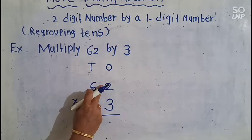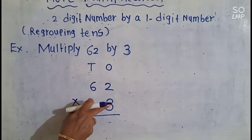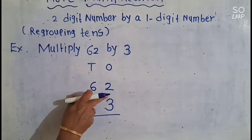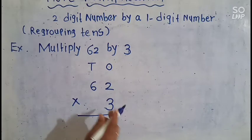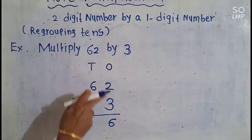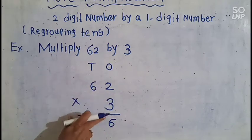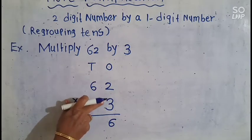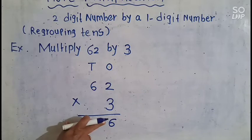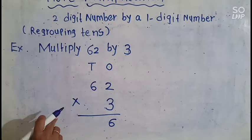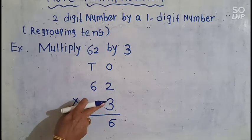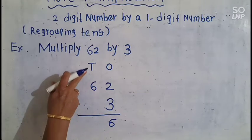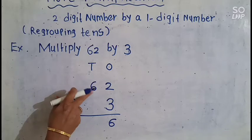3 2s are — 3 1s are 3, 3 2s are 6. Look here children: in the 1s place there is no regrouping number. Now we will do the 10s multiplication.